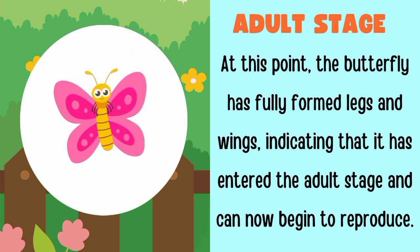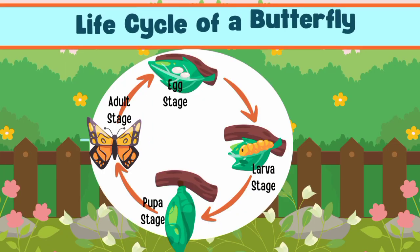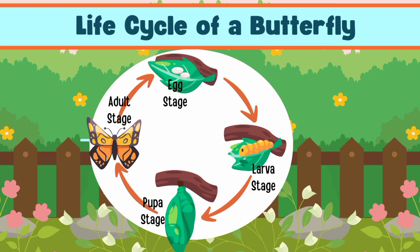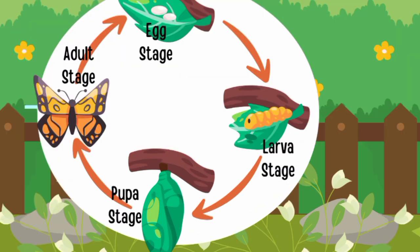These were the four stages of the butterfly life cycle: egg stage, larva stage, pupa stage, and the adult stage. Thanks for watching.